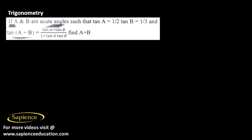If A and B are acute angles such that tan A is equal to 1/2 and tan B is equal to 1/3, and it is also given tan(A + B) is equal to (tan A + tan B)/(1 - tan A tan B).